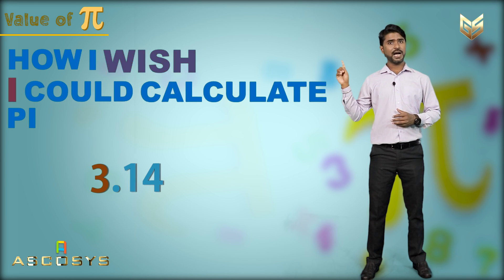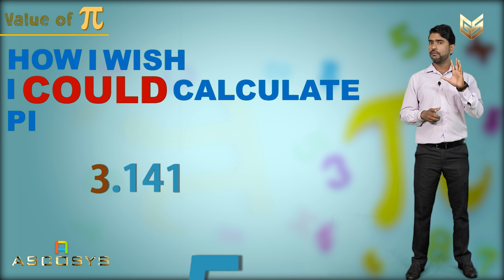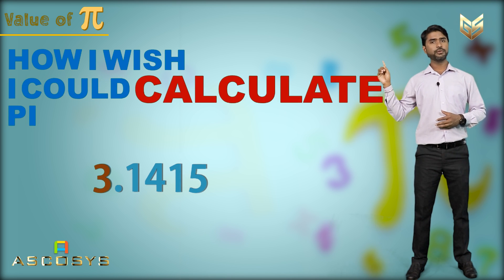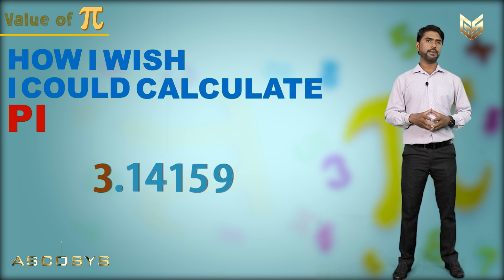Now you see, how I wish I. For I, one. Then could. For could, five. Then calculate. For calculate, nine. Then pi. For pi, two.